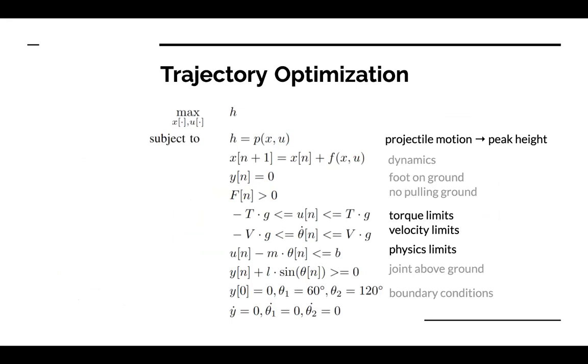Here is our full trajectory optimization. We are maximizing the height, which is calculated for projectile motion. The following constraints are applied to both the hip gear and knee gear, but just shown once for simplicity. We would like to highlight the actuator constraints. There are torque limits, velocity limits, and physics limits to approximate the torque speed curve that Adi mentioned to ensure that the trajectory is physically valid.